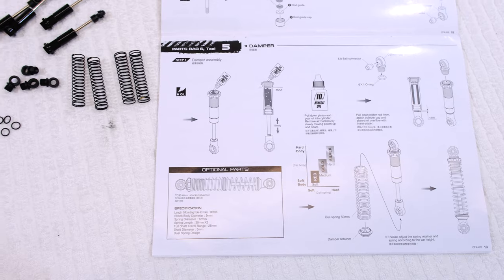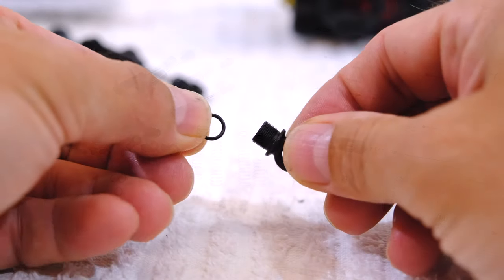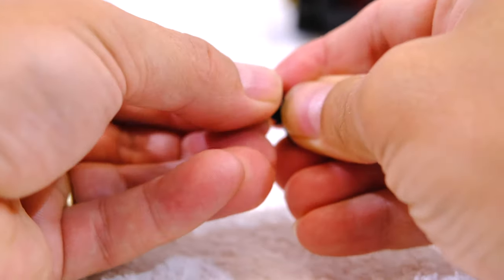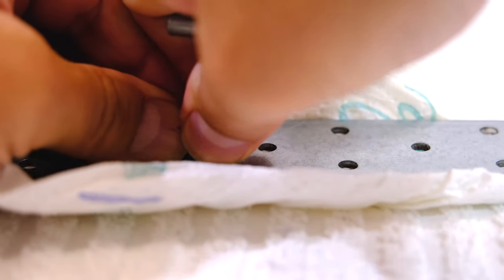The next step is to fill the dampers with oil and add the spring. First I add the O-ring to the top cap. And add a ball connector.